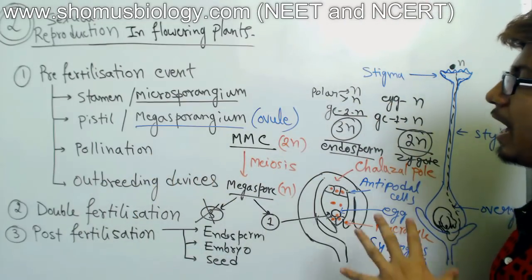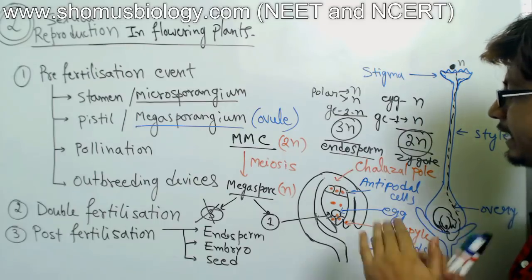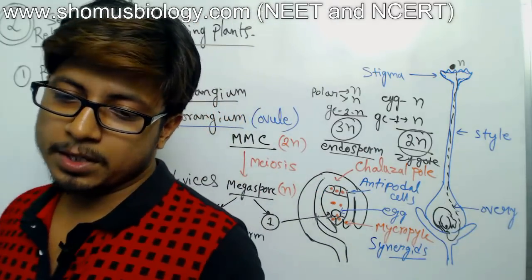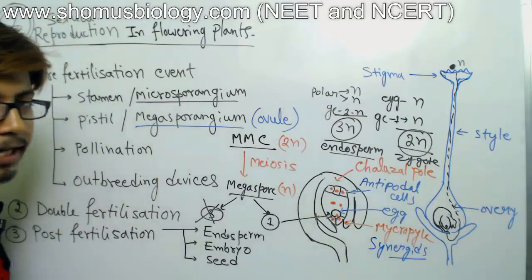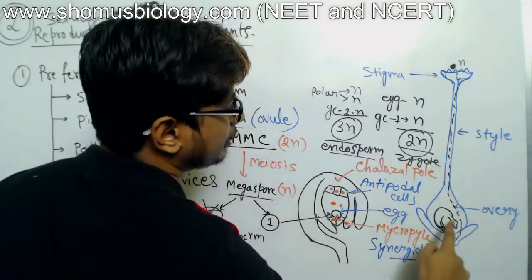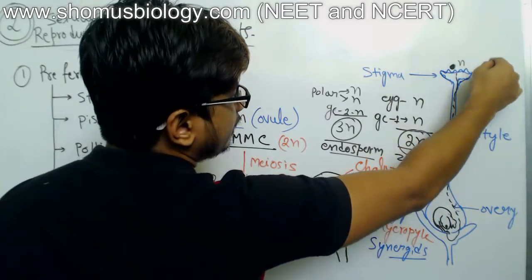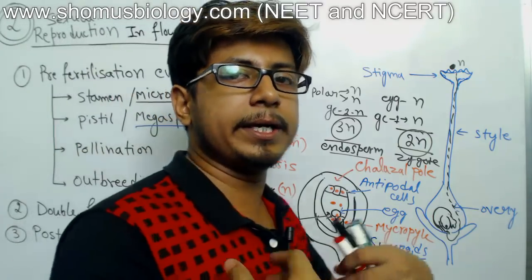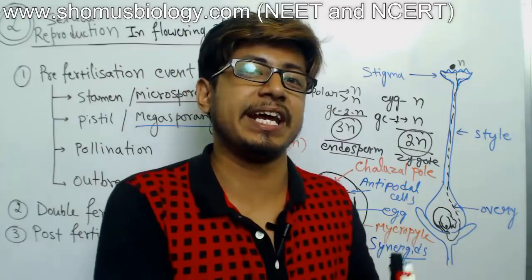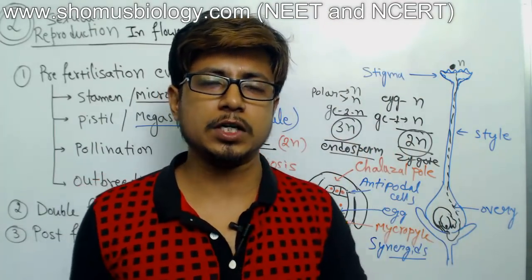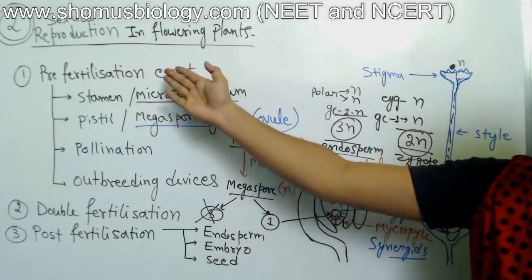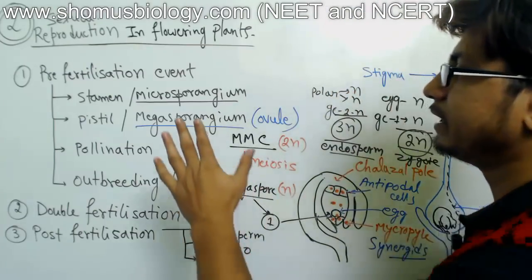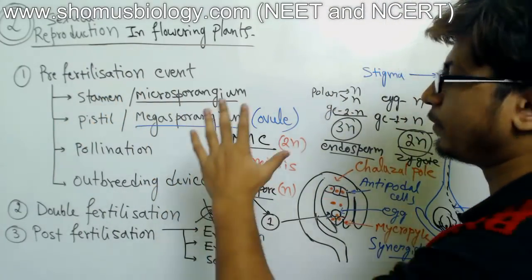When we look at the double fertilization event directly, I will show you exactly how the process takes place with the help of animation, which will make it easier to understand. In summary, the total structure of the female reproductive system of a flower — including stigma, style, and ovary — is altogether known as the pistil. Plants with only female flowers are known as pistillate plants, and plants with only male parts of the flower are known as staminate plants.